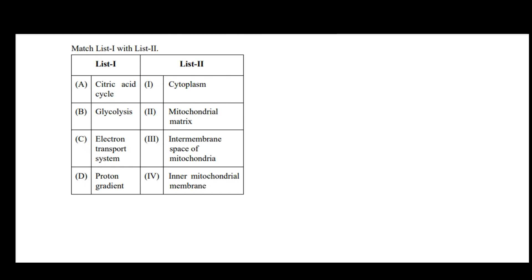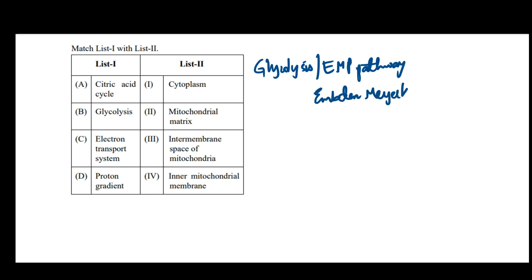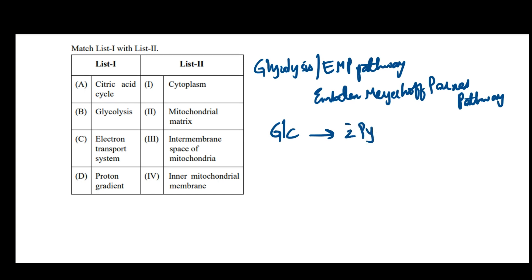Glycolysis is also known as EMP pathway, which is the Emden-Meyerhof-Parnas pathway. During glycolysis, a six-carbon compound glucose gets converted into two molecules of a three-carbon compound, that is pyruvate, with generation of two molecules of ATP. This process, glycolysis, occurs in the cytoplasm.